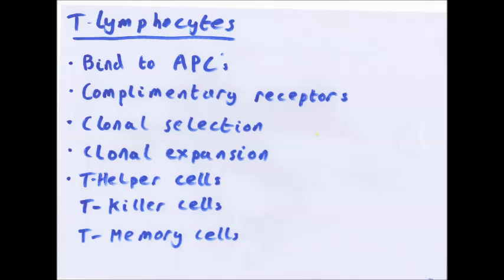Into different types of T-cells. You have T-helper cells, T-killer cells, T-memory cells. T-memory cells are just there to remember that antigen so it can react quicker. T-killer cells attach directly to the pathogen and destroy it. And T-helper cells release cytokines. These cytokines will then attract and activate B-cells or B-lymphocytes. That's basically what T-lymphocytes do.